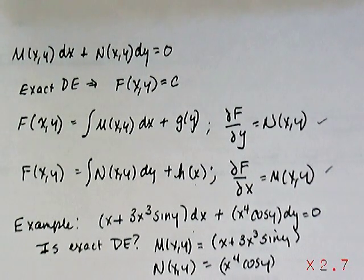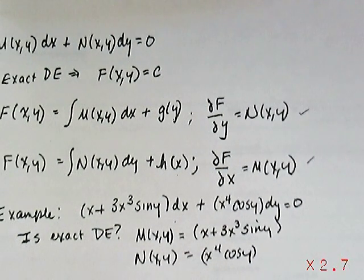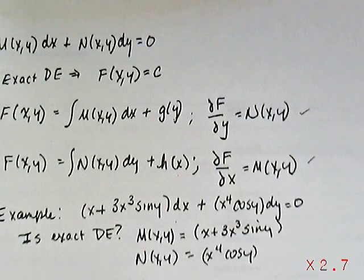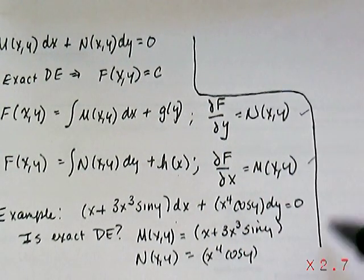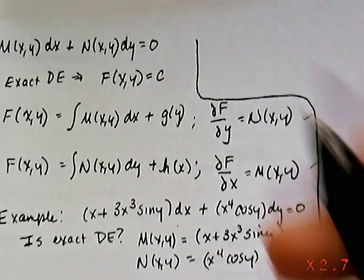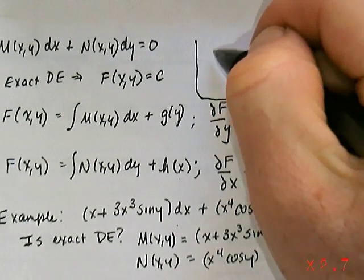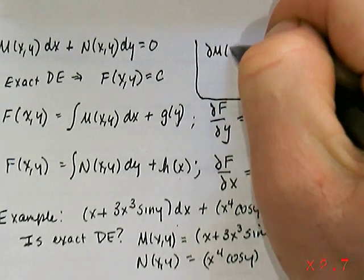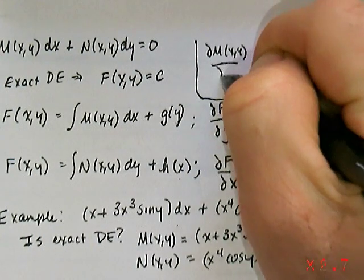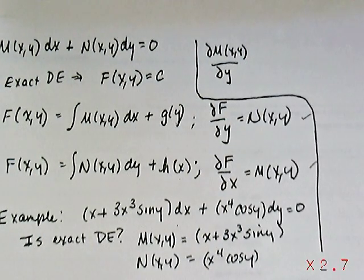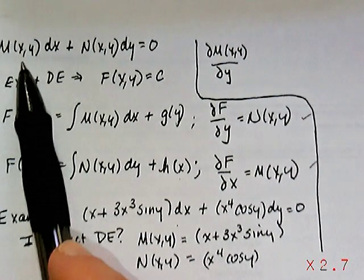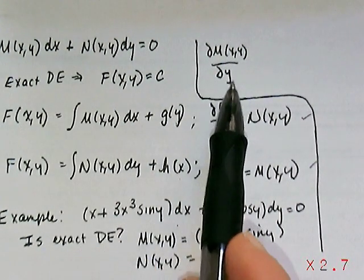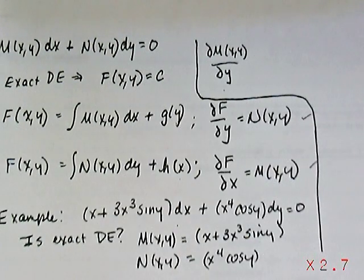So our conditions for checking whether the equation is exact or not is we need to evaluate partials. The partials that you want to compare is the partial of M(x,y) with respect to y. The way to remember that is in the original equation, you have the M function next to dx, so take the partial with the other variable, y in this case.